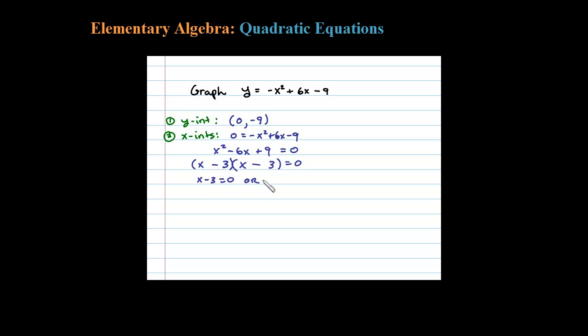Notice here the two solutions that we get are the same solution, so that's called a double root. In fact, we only get one x-intercept, so the x-intercept here is 3 comma 0.